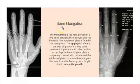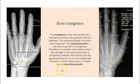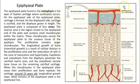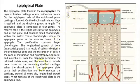Bone growth in length occurs through interstitial growth at the metaphysis, where cartilage is found — visible as dark lines on imaging in children. There is a zone of transition between bone and cartilage with distinct zones: reserve cartilage, cell proliferation, cell hypertrophy, calcification, and bone deposition. We continue to grow in length as long as cartilage remains, typically until around age 14–15.